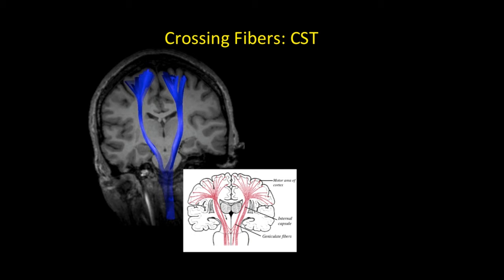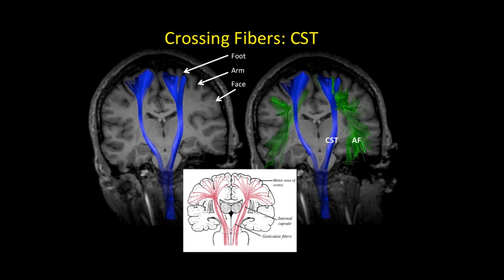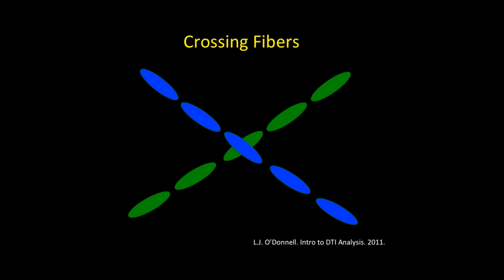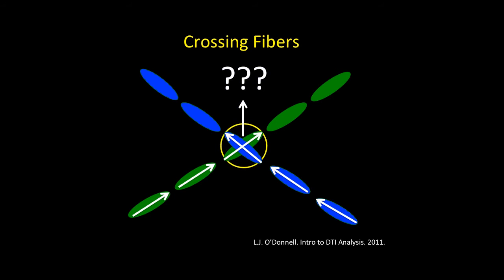Another limitation of tractography we should be familiar with is that the deterministic or conventional method of tractography omits cross fiber tracts. We know that the CST is responsible for the arm, hand, and face, but routinely we don't see fibers to these cortical areas with conventional DTI. This is due to the crossing fibers of the arcuate fasciculus, the primary language pathway. O'Donnell et al. has a nice diagram of these vectors crossing out or creating spurious false fibers. You have to be mindful of this limitation in our radiology reports.